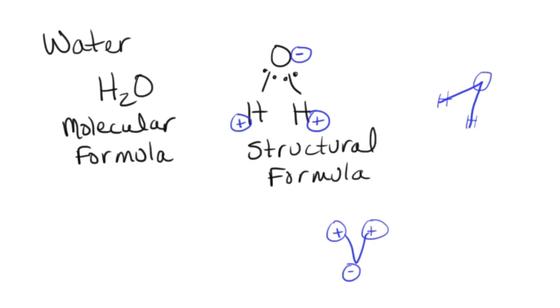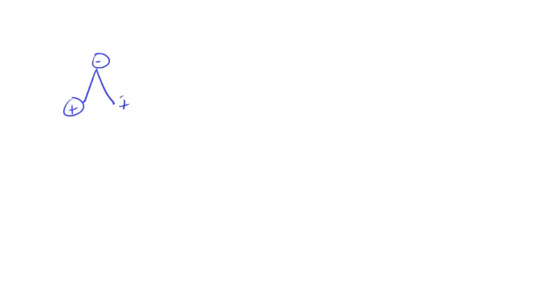Water is a very good solvent — it does a really good job of dissolving different things. This ability to dissolve things comes from the fact that the water molecule has two opposite ends to it. Whenever we have a molecule with these two opposite ends, we call it a polar molecule. So water is a polar molecule.